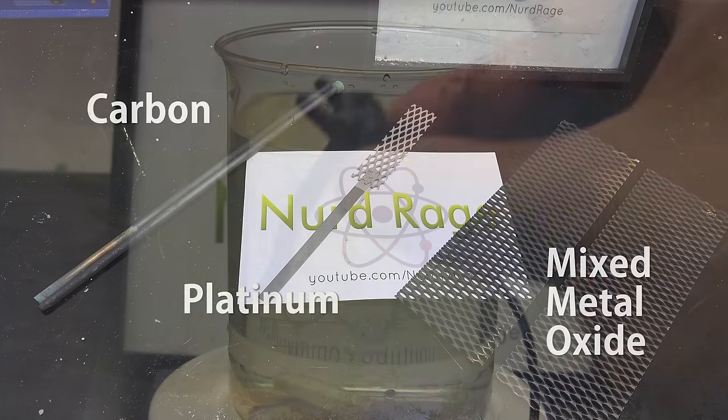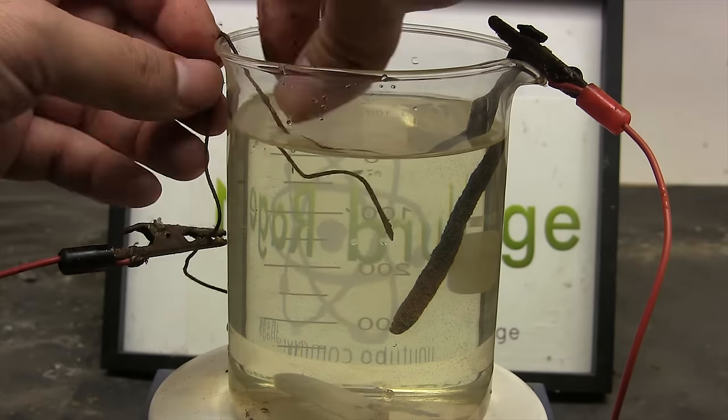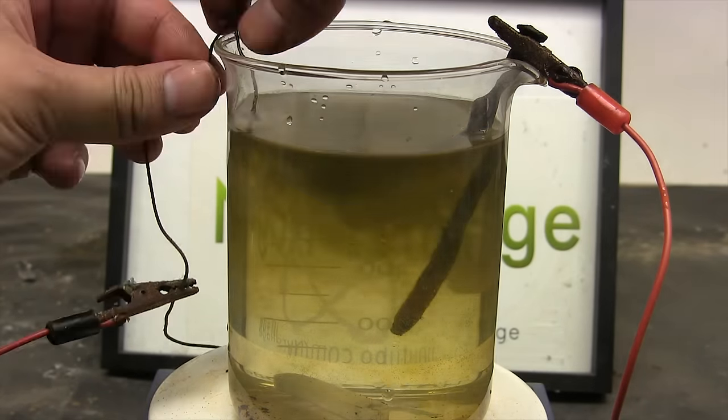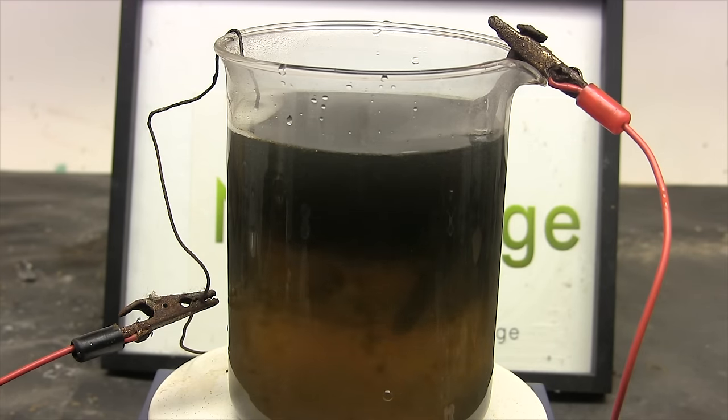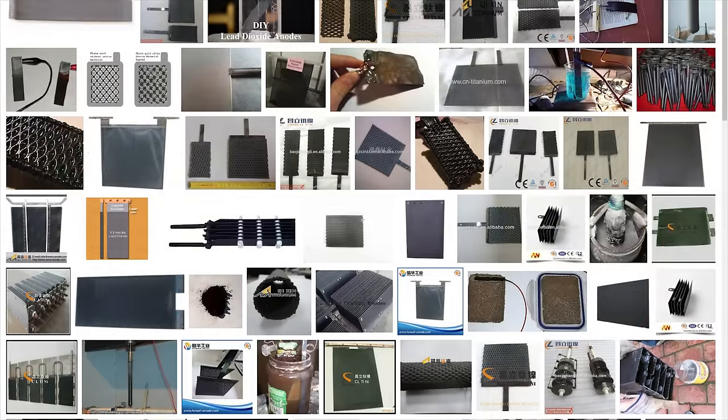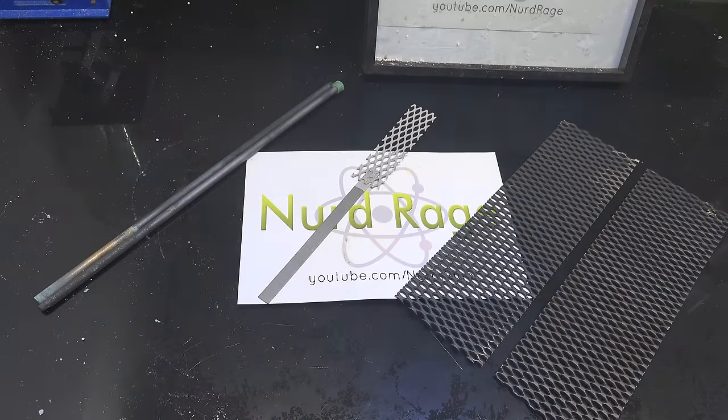The common metals like steel, iron, copper, aluminum and so on cannot be used. They all get totally destroyed in the chlorate cell. If you need to ask if an electrode will work then chances are it won't work. Now there are exotic anodes like magnetite, boron-doped diamond, glassy carbon and lead dioxide, but for the most part carbon, mixed metal oxide and platinum are the most common.